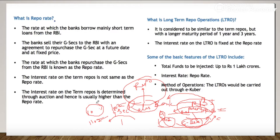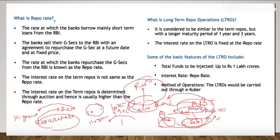The name 'repo' came about because this is nothing but the repurchase rate. The government securities that a bank sells once — when it's time to repurchase them, they repurchase at higher prices. The difference between the original price and the higher price is termed the repo rate. I hope you now understand how repo rate works.